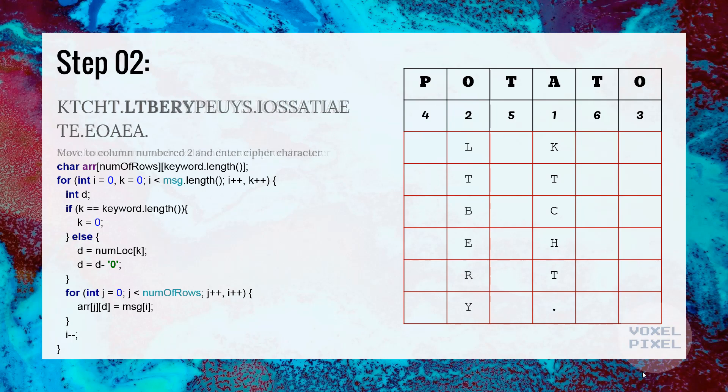Next, we will move on to the column number 2 and we will put next letter. We will keep on doing this until entire grid is filled with the ciphertext.